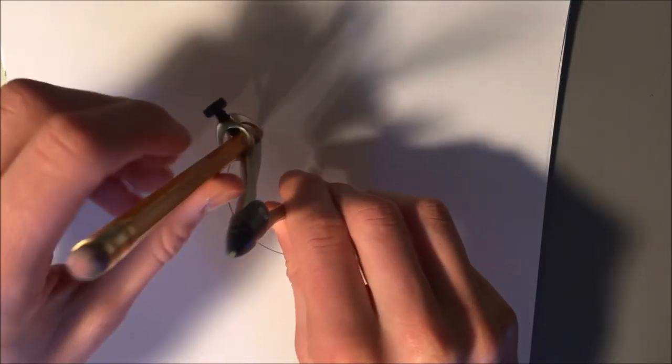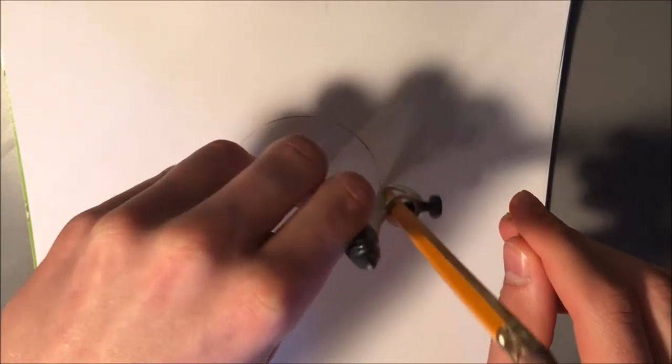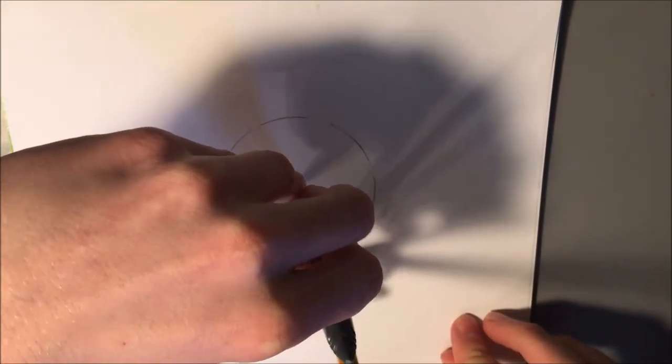So to start it off, what you're going to need to do is draw a circle. You can do this either by using a round object and tracing it, or by using a compass like I did.